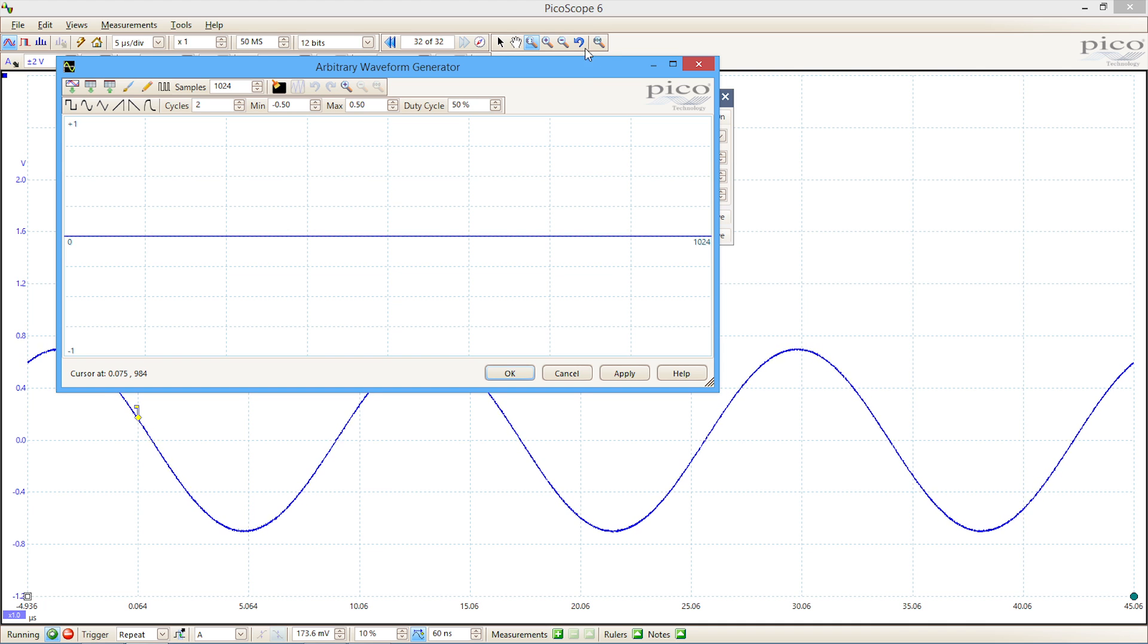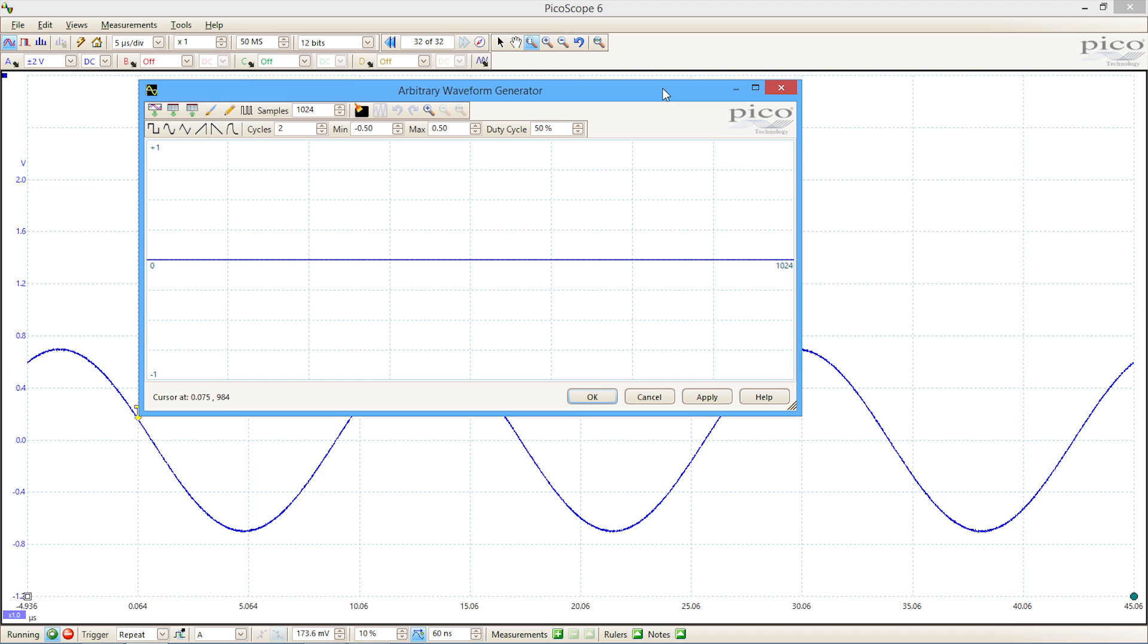So I've got the editing tool there for the ARB. The first thing to do is to select the number of points that we'll be outputting data from, from the D to A converter.